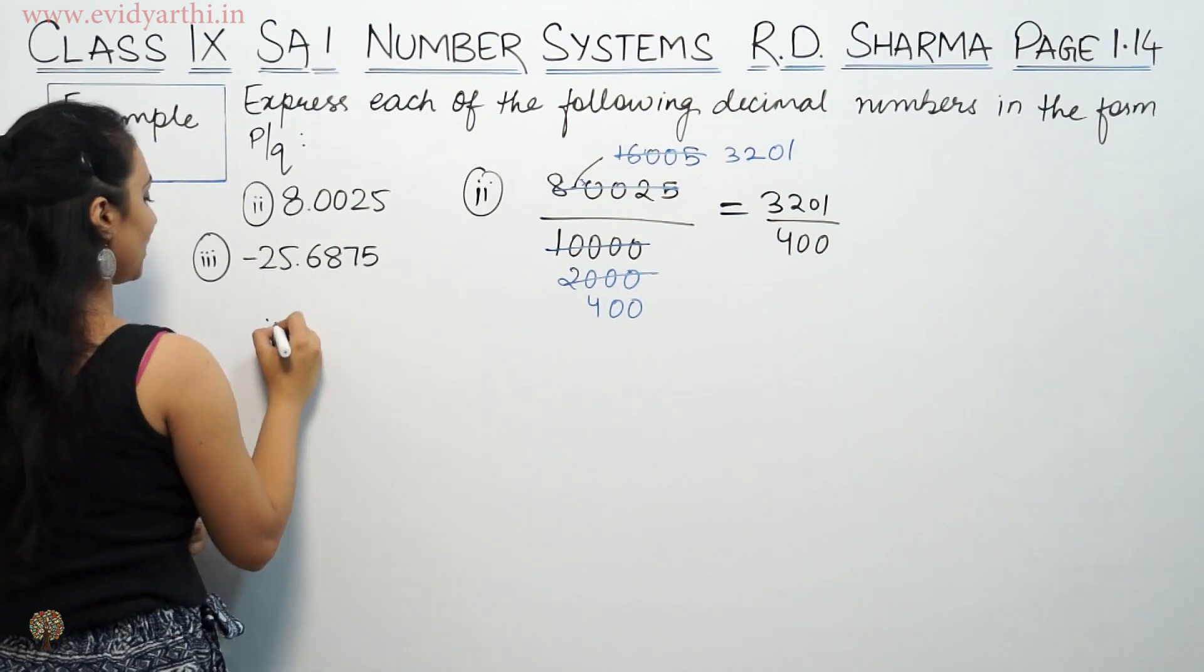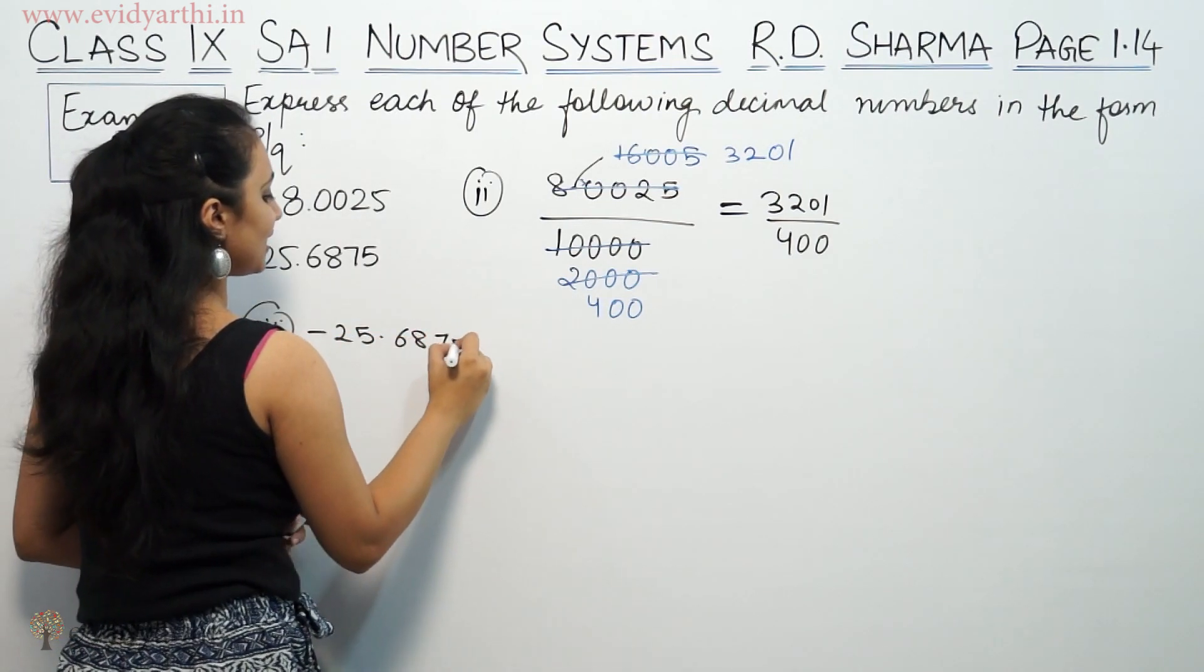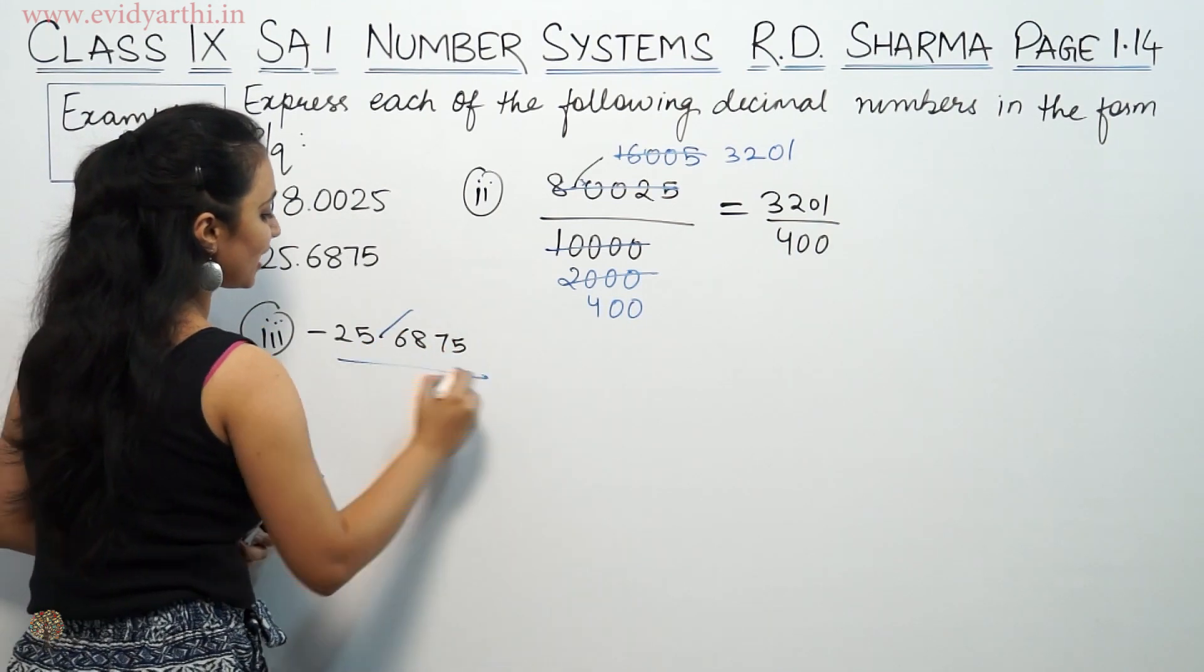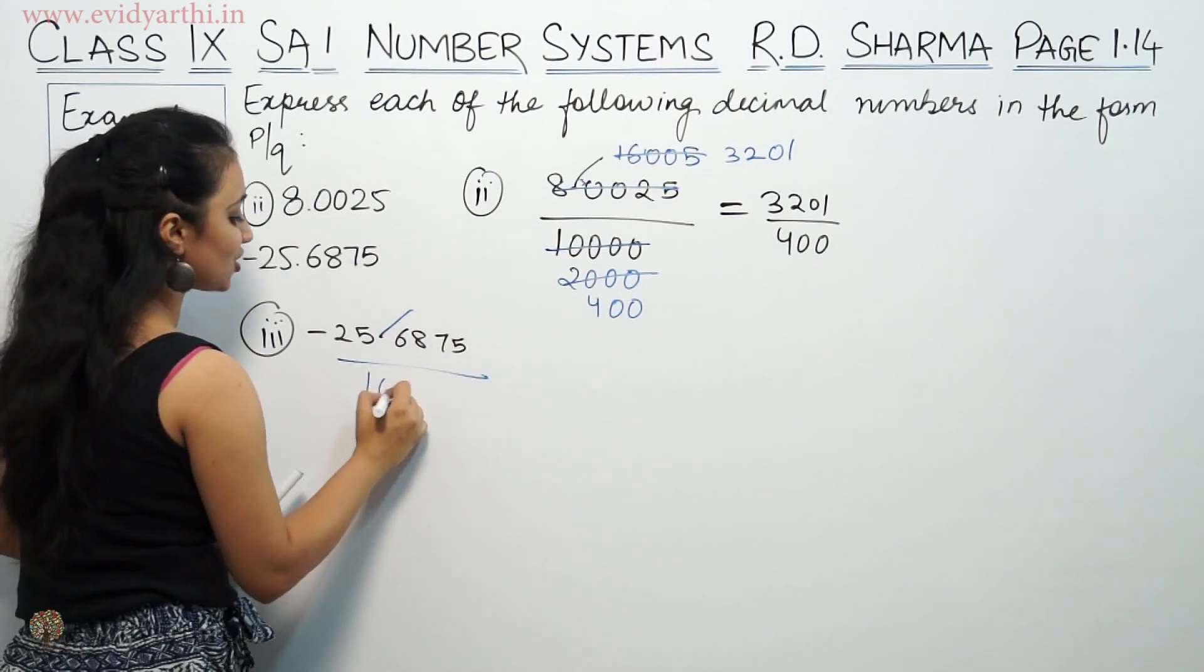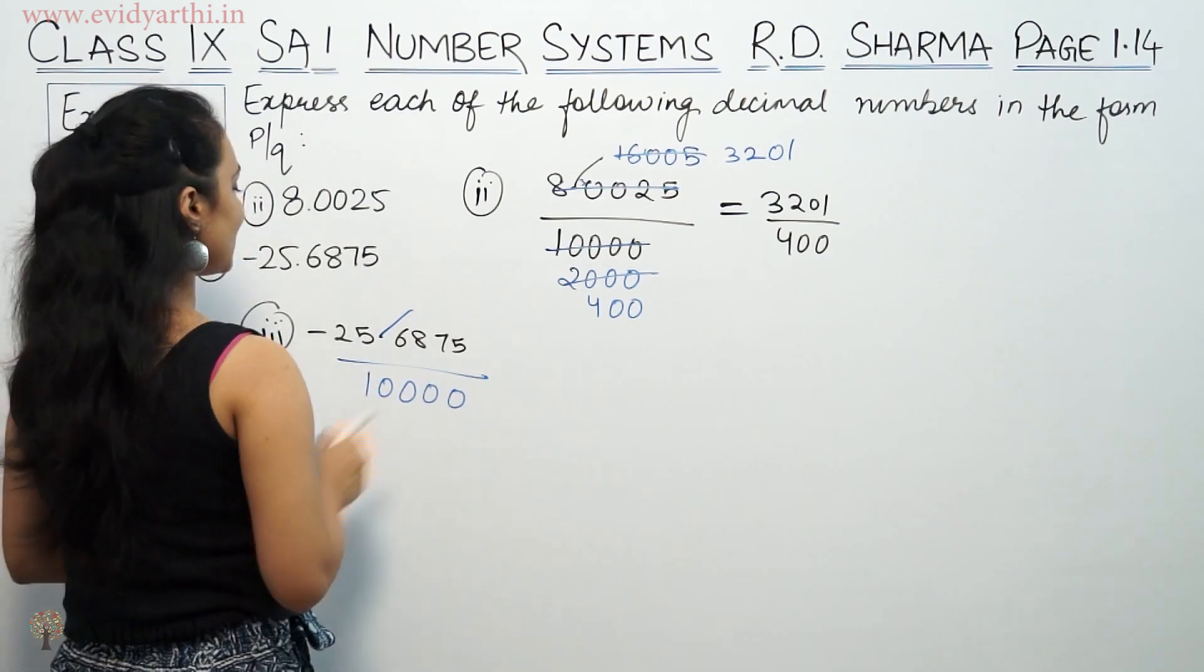Second part, I mean third part, this is minus 25.6875. So this is minus 25.6875. So we'll remove the decimals. We have 4 digits, so this is 4 zeros. 1, 2, 3, 4. So we'll cut.